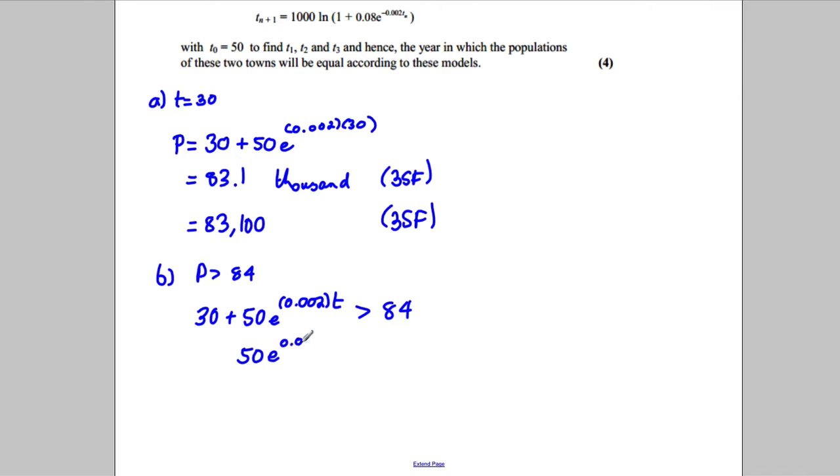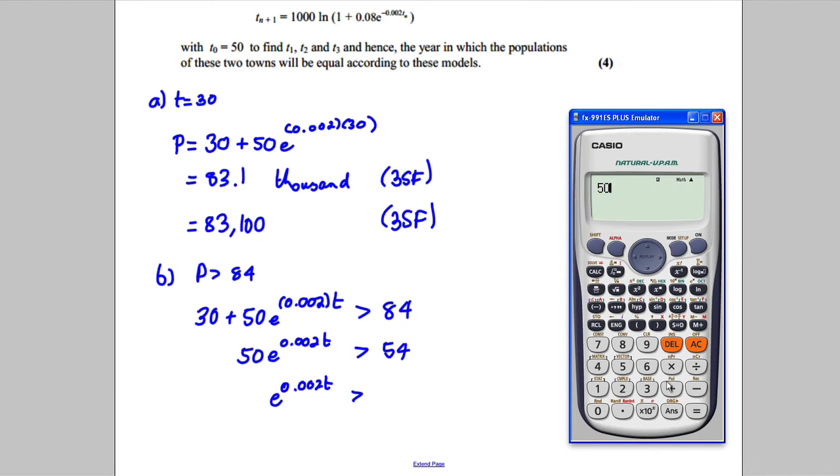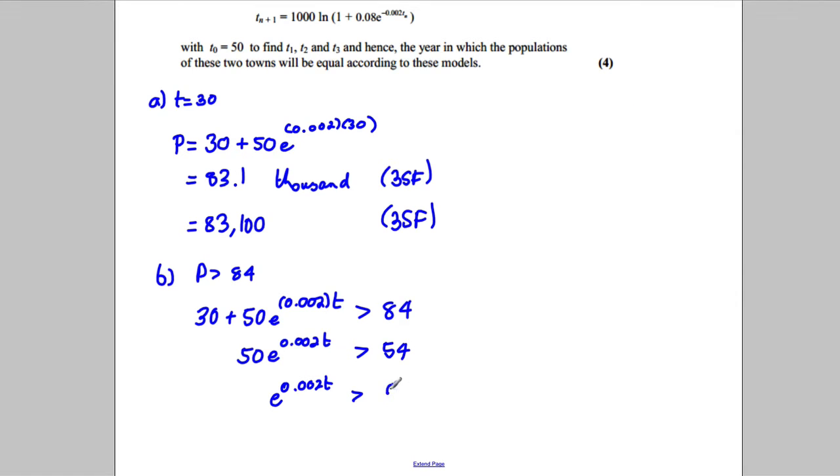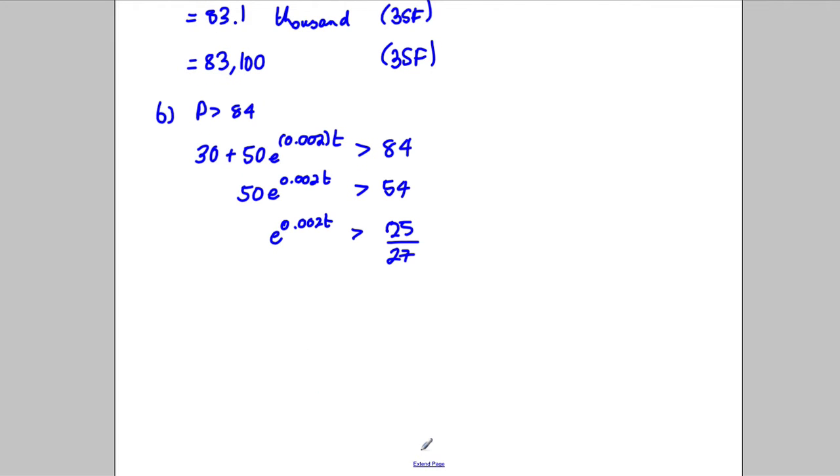50 e to the 0.002 T is bigger than or equal to 84 take away 30, which is going to be 54. Now divide by 50, e to the 0.002 T is going to be bigger than or equal to 50 divided by 54. 50 divided by 54 is a recurring decimal, so just write 25, what does it say, 25 over 27, like that.